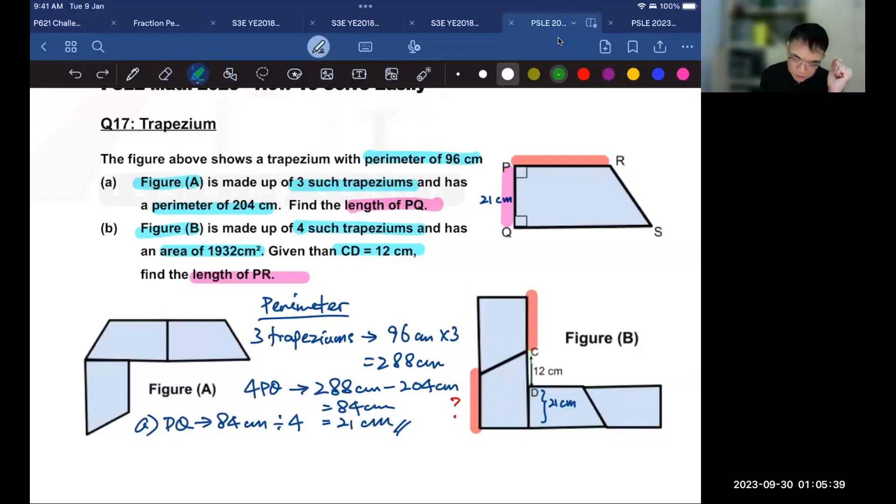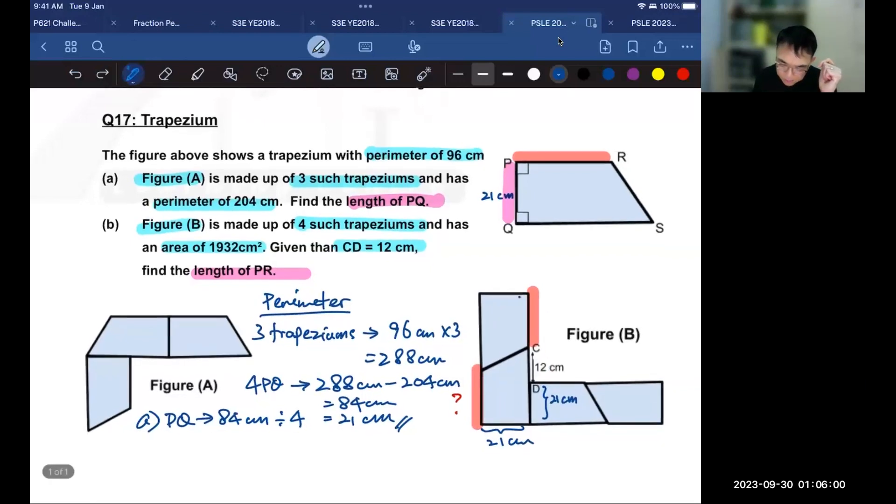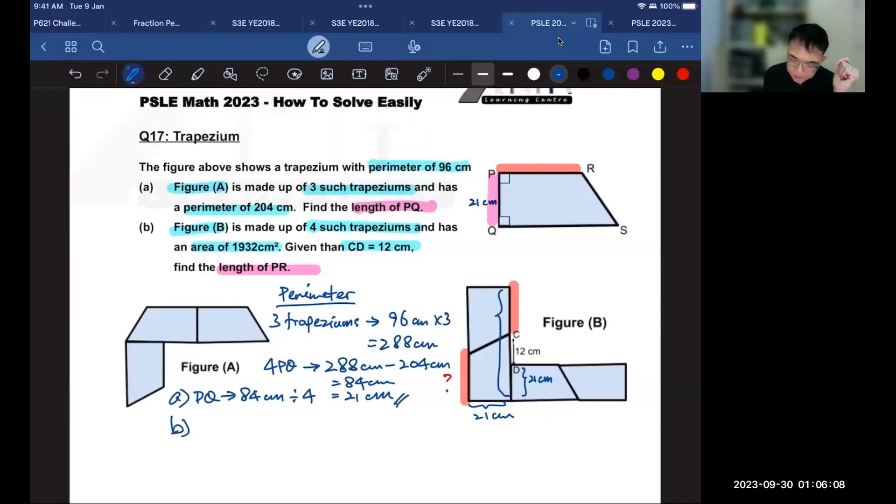Why do I want to do that? Well, if I know that this side is 21 centimeters, and I know the area of this rectangle, I will be able to find the length of the rectangle, which would be here. So what we're going to do for part B is find the area of each rectangle, which is made up of two trapeziums. So each rectangle would be 1932 square centimeters divided by 2, to get 966 square centimeters.